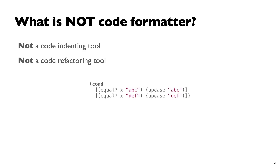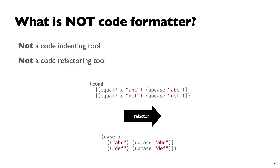For example, a refactoring tool will turn something like a cond expression into a case expression that looks nicer. The code formatter does not concern itself with this kind of refactoring — it aims to be very fast and only does trivial things like spacing and stuff like that.